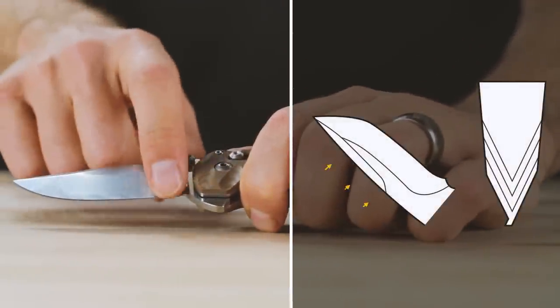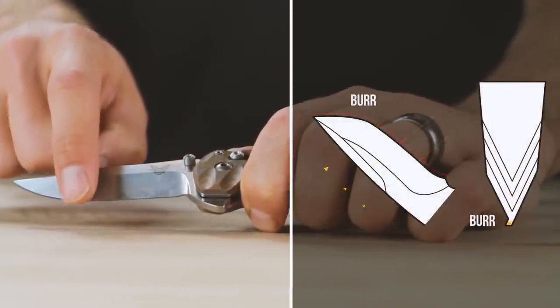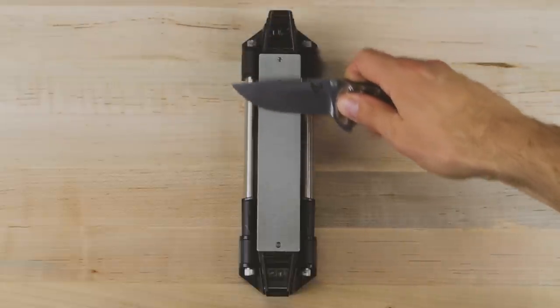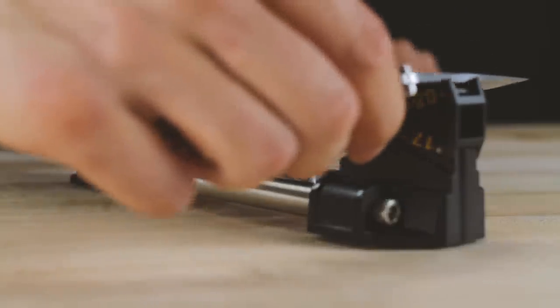Repeat on same side until a burr is formed along the entire edge. Count the number of strokes needed to create a burr. Repeat the same number of strokes on the other blade bevel.